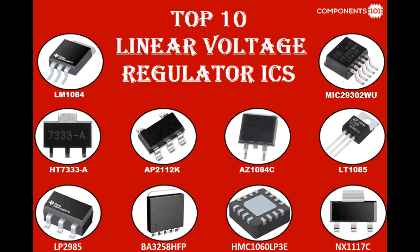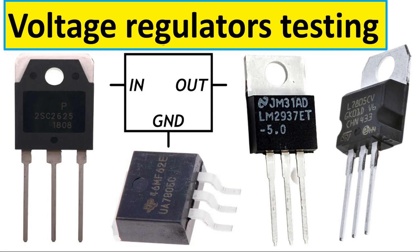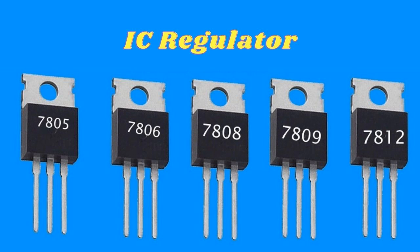Comparison: The error amplifier continuously compares the reference voltage, which represents the desired output voltage, with the actual output voltage of the regulator. Error signal generation: If the output voltage deviates from the reference voltage, the error amplifier generates an error signal proportional to the difference between the two voltages. This error signal represents the amount by which the output voltage needs to be adjusted to match the desired voltage.